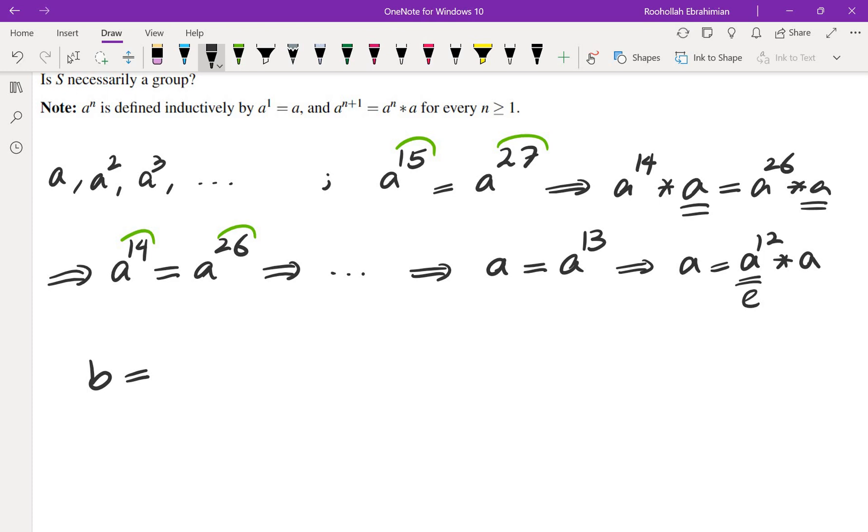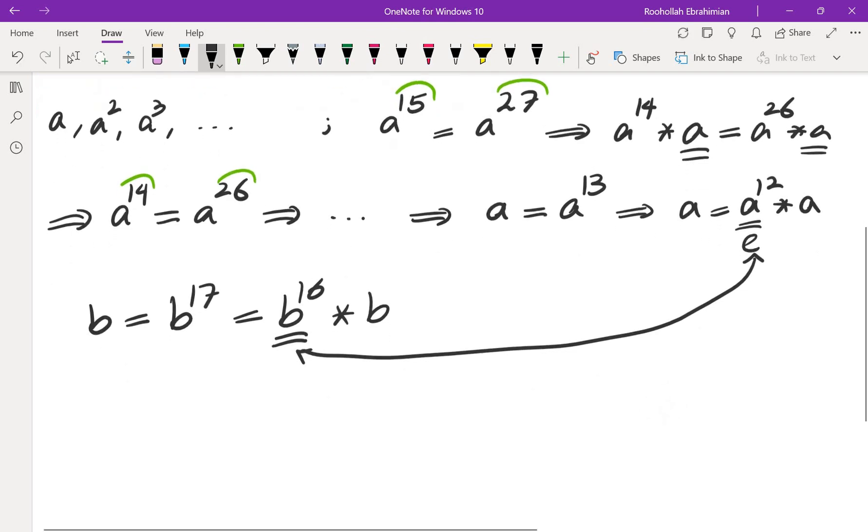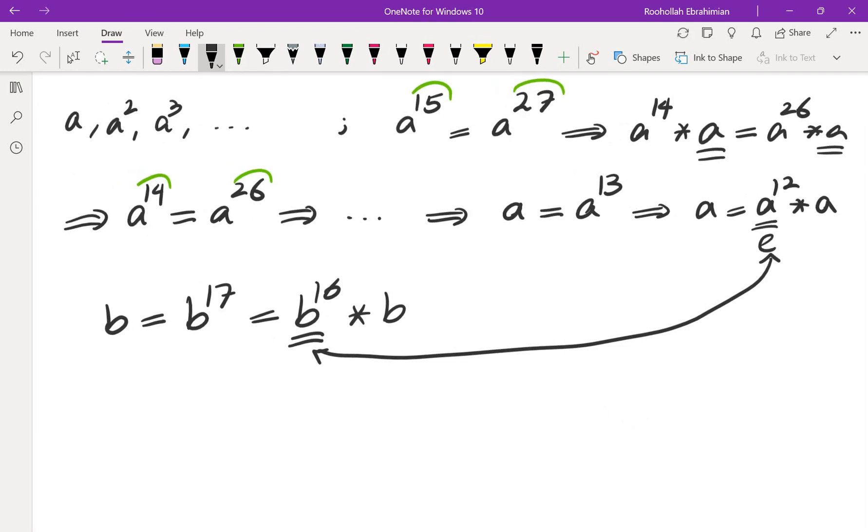So if I look at something else, if I look at b, b may be equal to b to the 17th, this gives you a different thing. This gives you b to the 16th times b. And this element may not be the same as this element. These two elements may be different. So what are we going to do with that? So what I thought was, let's see what characteristic this element has, let's do that in general, and let's see what we can get.